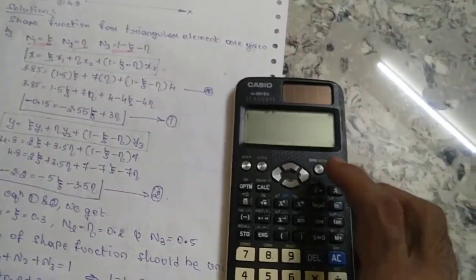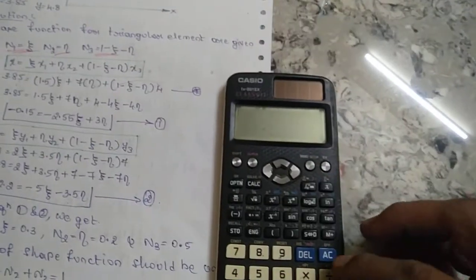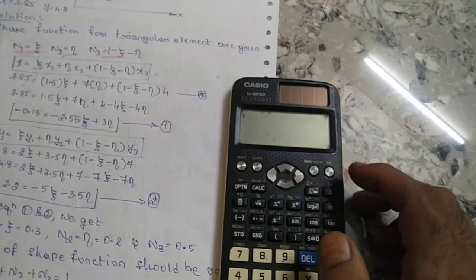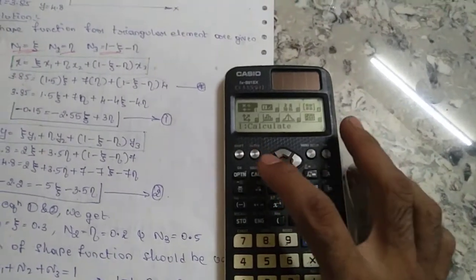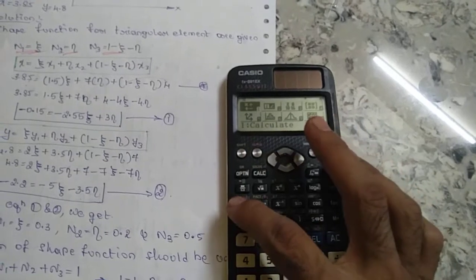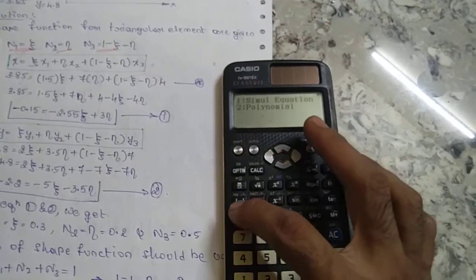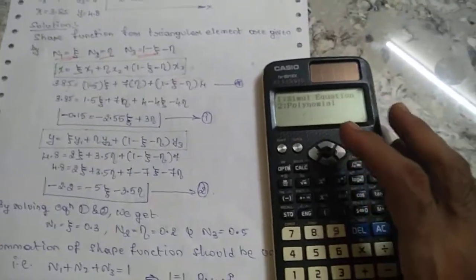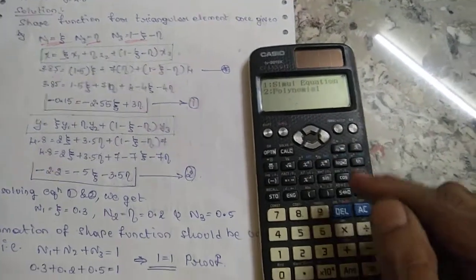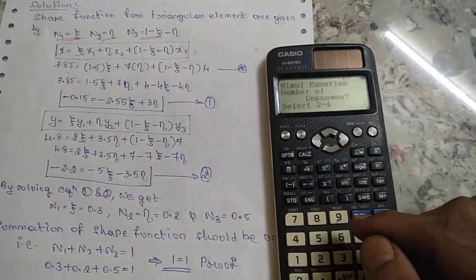I'm using fx-991 EX, which is allowed in your examination. Initially when it's off, then turn it on. Go to setup, then alpha A to get simultaneous equation.